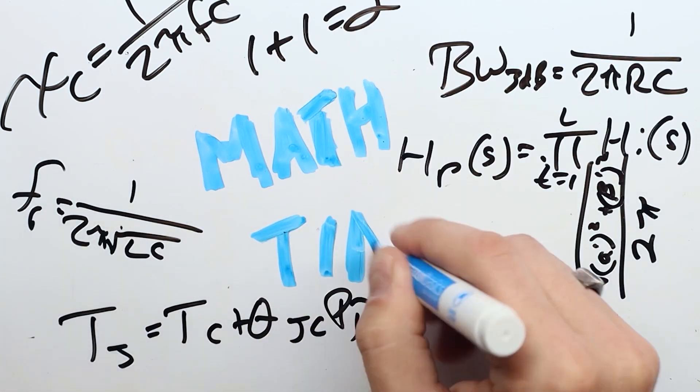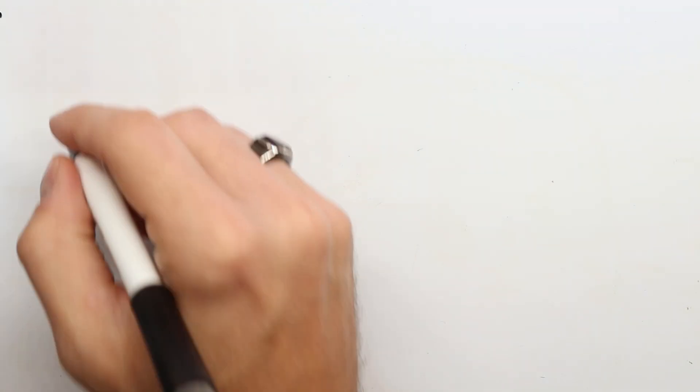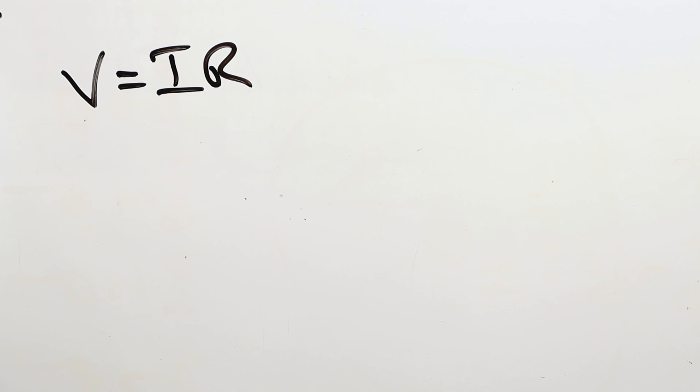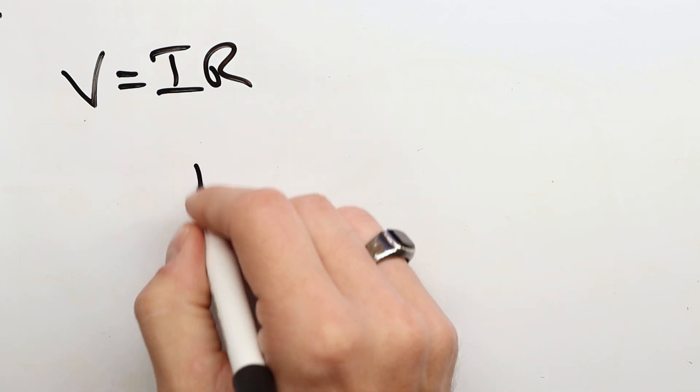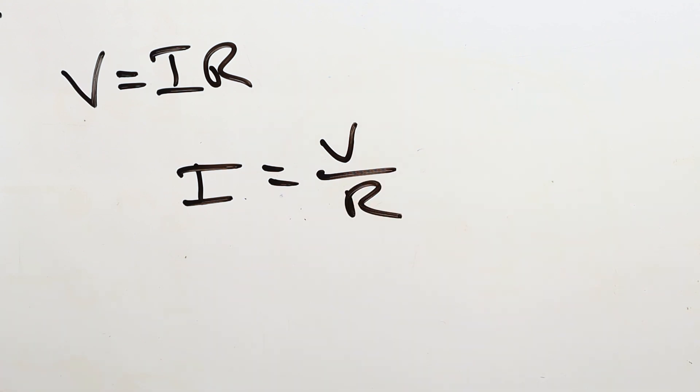So for example, if I want to find voltage and I know current and resistance, we would solve it as V equals current times resistance. If I want to find current, I equals voltage divided by R. Current is equal to voltage divided by resistance. Resistance is equal to voltage divided by current. We're simply rearranging the equations.